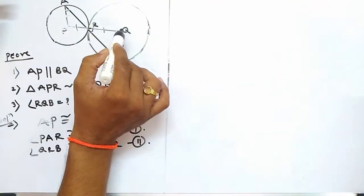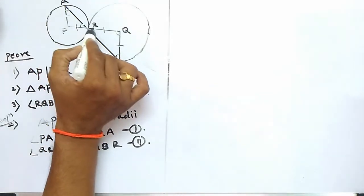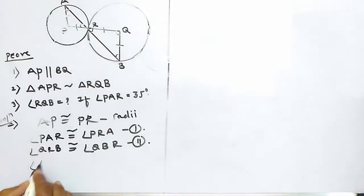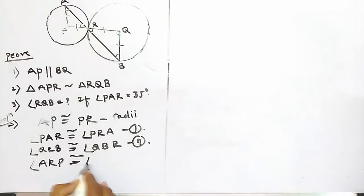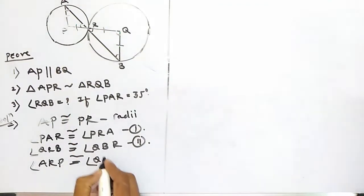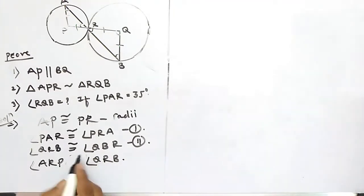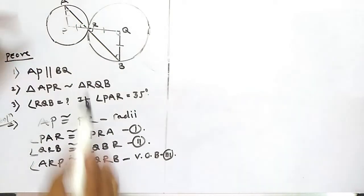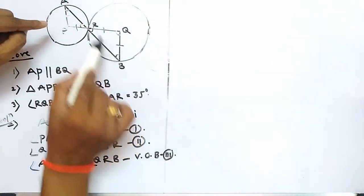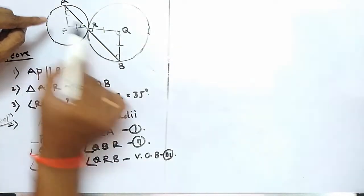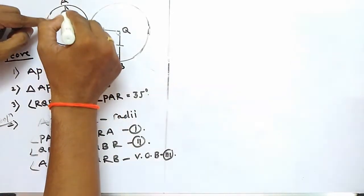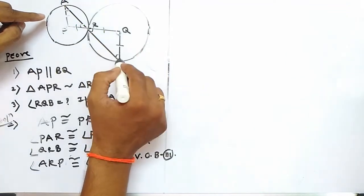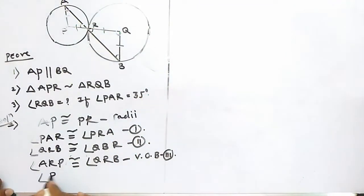Now, if we see carefully, line segment AB and line PQ intersect at point R. Therefore, angle ARP and angle QRB are vertically opposite angles, so they are congruent to each other. This is equation three. From equations one, two, and three together, we can say that angle PAR is congruent to angle QBR.